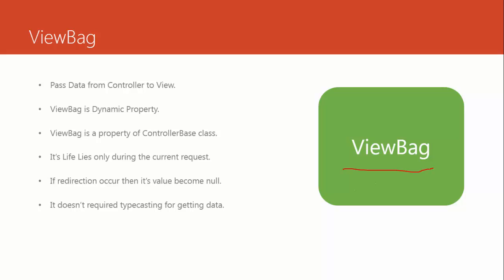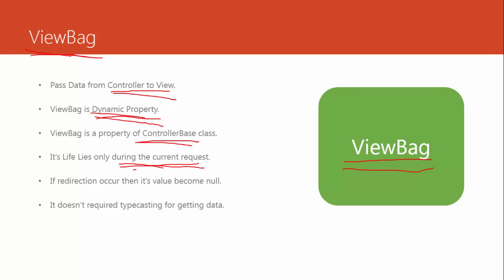Now let's understand ViewBag. As the name suggests, ViewBag is like a bag that contains data. ViewBag is also similar to ViewData — it is also used to pass data from controller to view. However, ViewBag is a dynamic property and is a property of the ControllerBase class. This is an important point to remember: ViewBag is a property of the ControllerBase class. Its life lies only during the current request, just like ViewData — not for subsequent requests. If you redirect the URL or reload the request, its value becomes null.